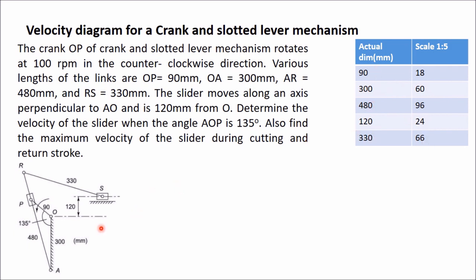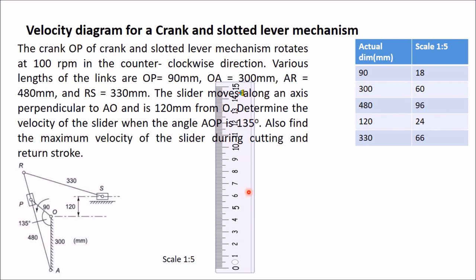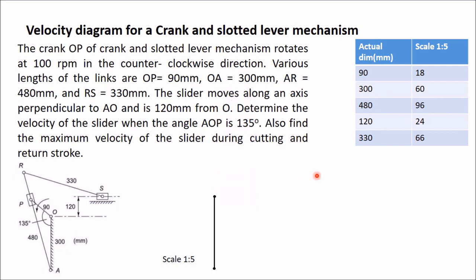Now we will draw the configuration diagram. First, draw OA which is a vertical line equal to 300 mm. At scale 1:5, 300 mm means we draw 60 mm, that is a 6 cm line. Name these points O and A, and hatch this to show that OA is fixed.